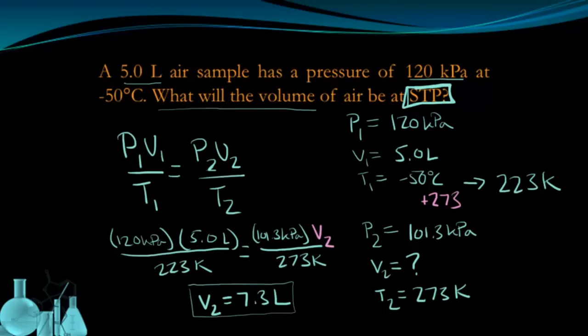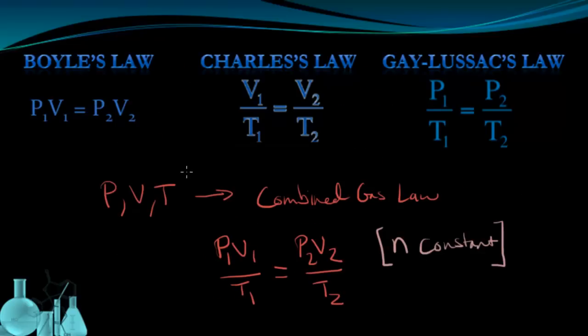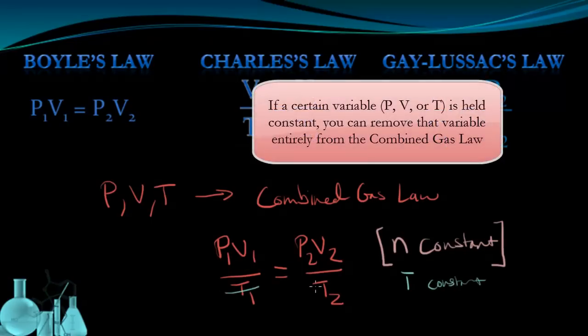Now we can actually use the combined gas law to derive the original relationships discovered by Boyle, Charles, and Gay-Lussac. Remember, the combined gas law is true when N is constant. But if any of the other values are constant as well, they basically get removed from the equation. So, for example, if V is also constant, if I have a constant volume, that cancels the volume out of the equation. And I'm left with P1 over T1 equals P2 over T2, which is the same as Gay-Lussac's law. I could also choose to hold temperature constant, removing T1 and T2 from the equation, and I'll be left with Boyle's law, P1 V1 equals P2 times V2.